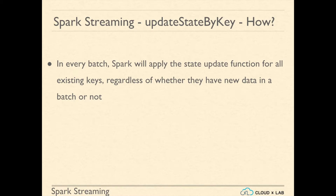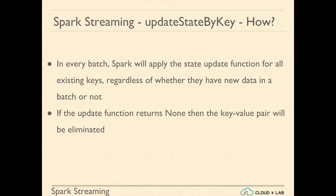In every batch, Spark will apply the state update function for all existing keys, regardless of whether they have new data in a batch or not. If the update function returns none, then the key-value pair will be eliminated.